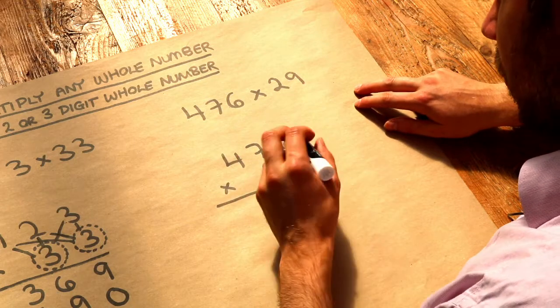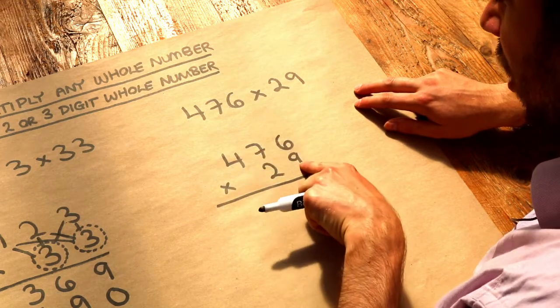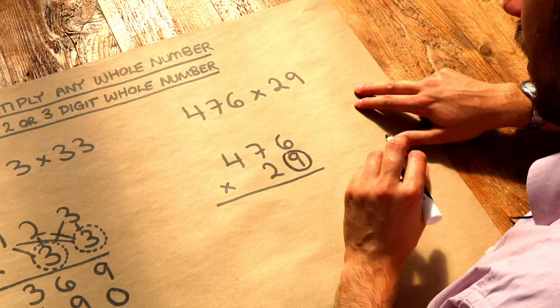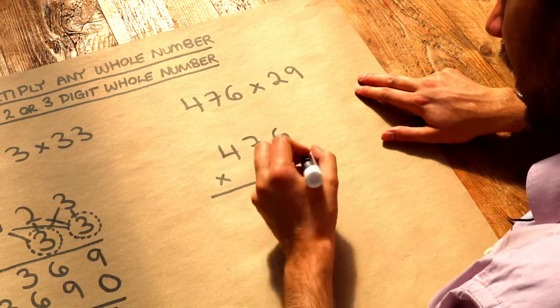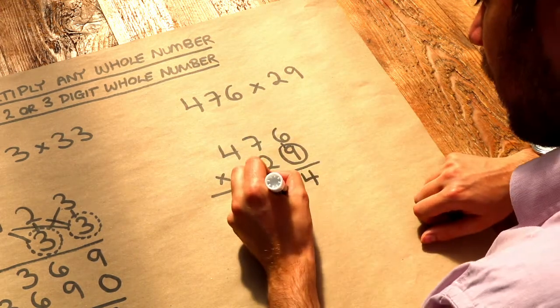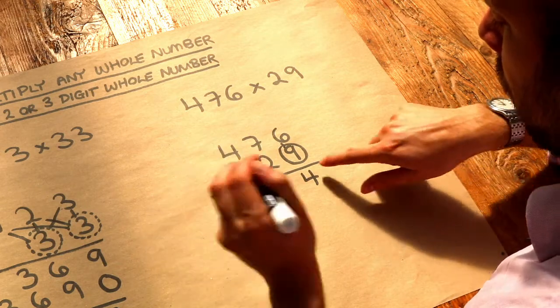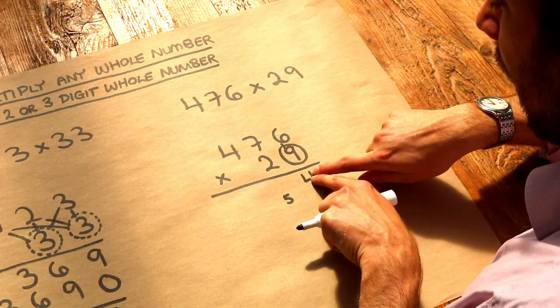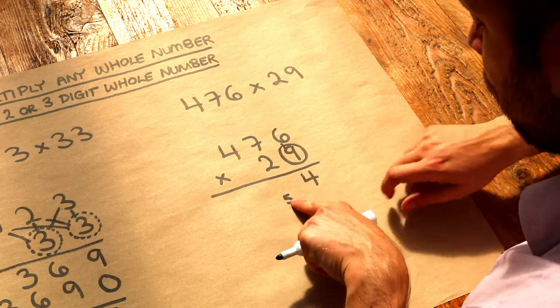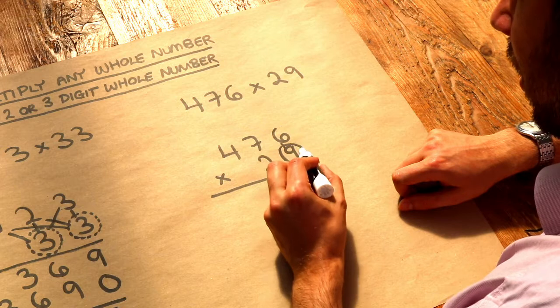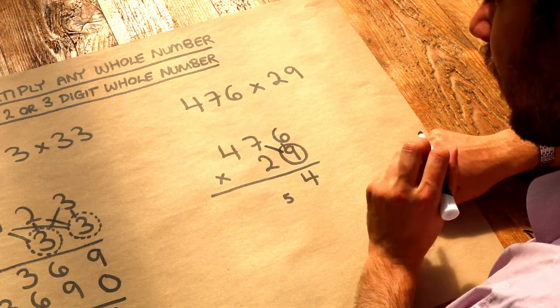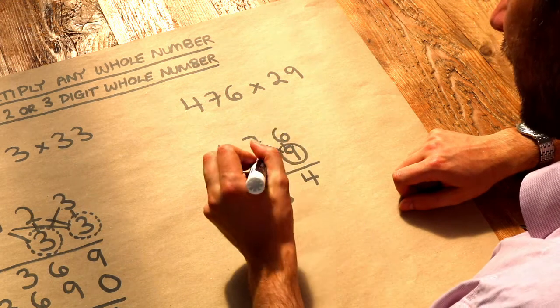So again we do 476 just multiply by the nine for the moment. So I'm going to put a circle around that, and then we first do the six times the nine. That's 54. So we put the four here, carry the five. So remember if we get 54 we put the units digit there and then we carry the tens digit and put it underneath the next column as a little small number. So we've done six times nine. Now seven times nine. That's 63 plus the carried five. That's 68.